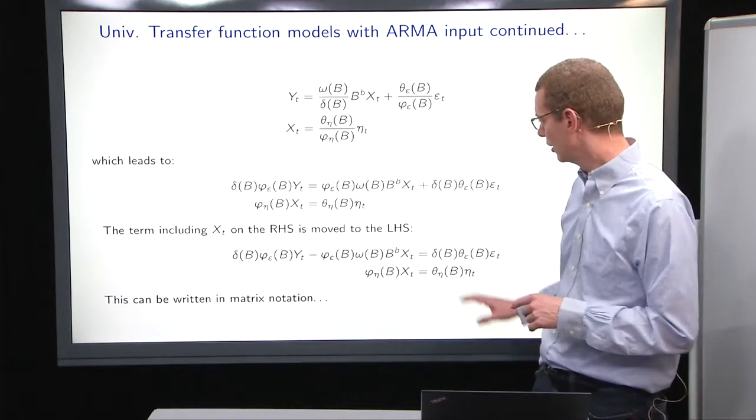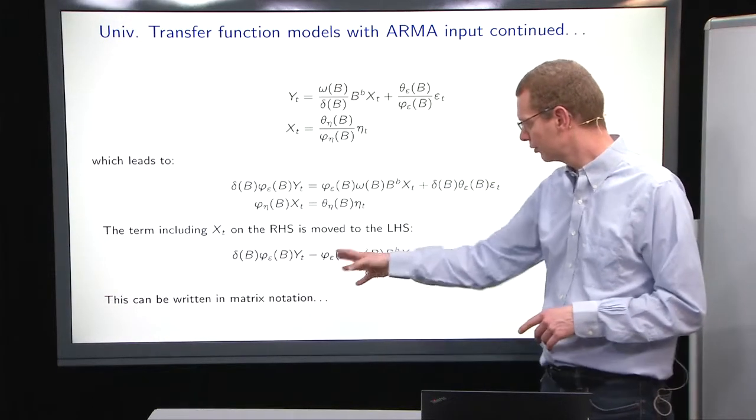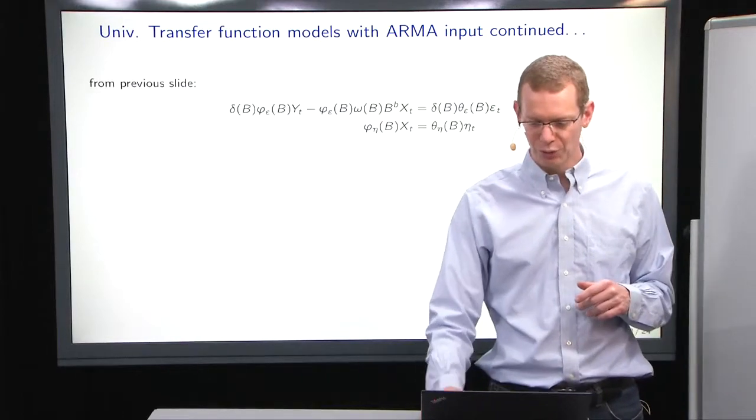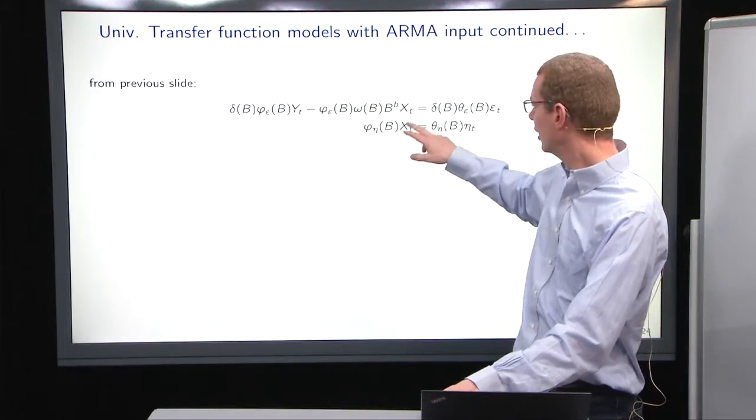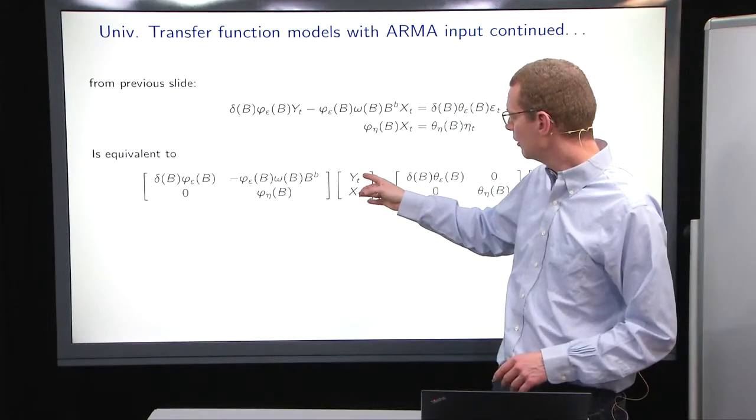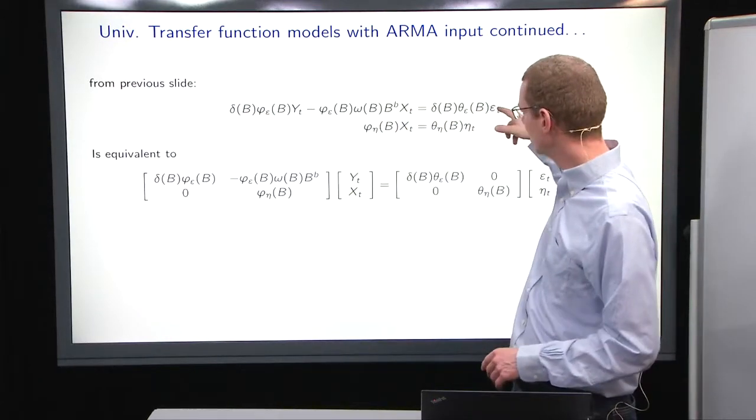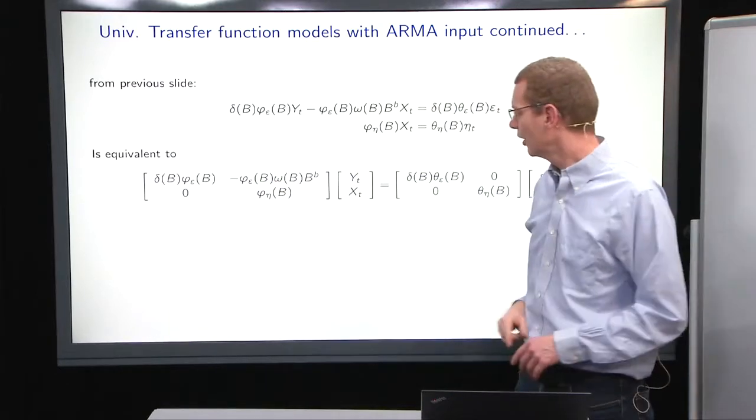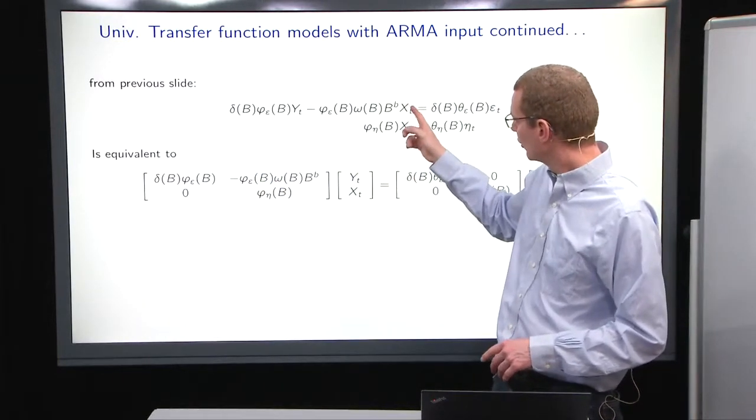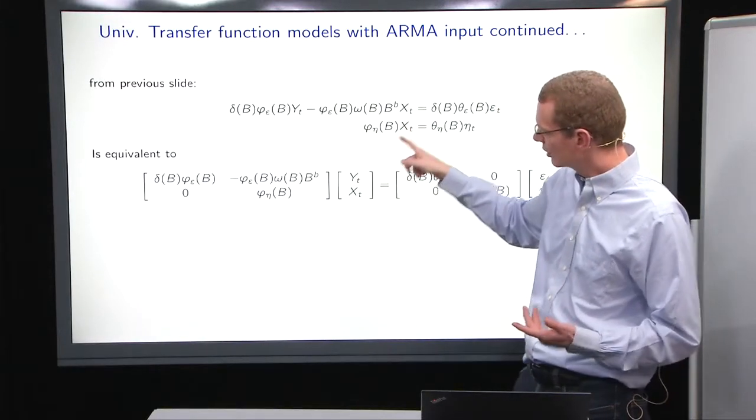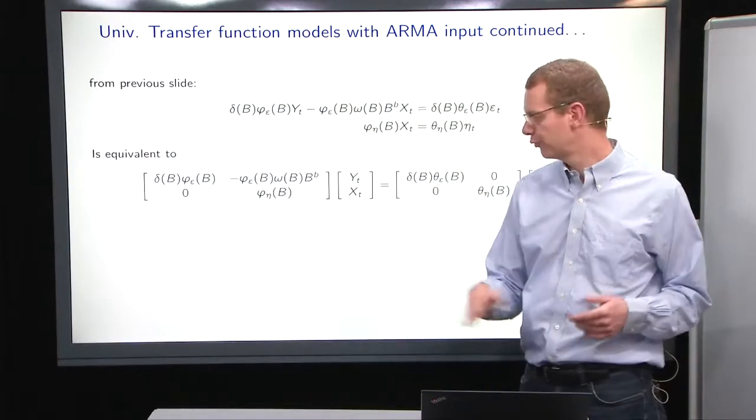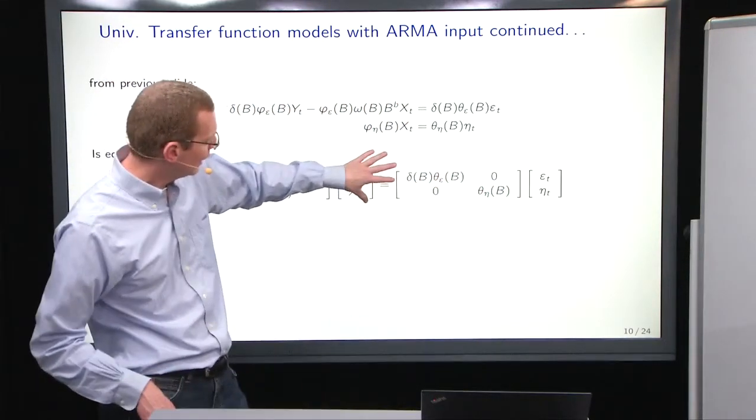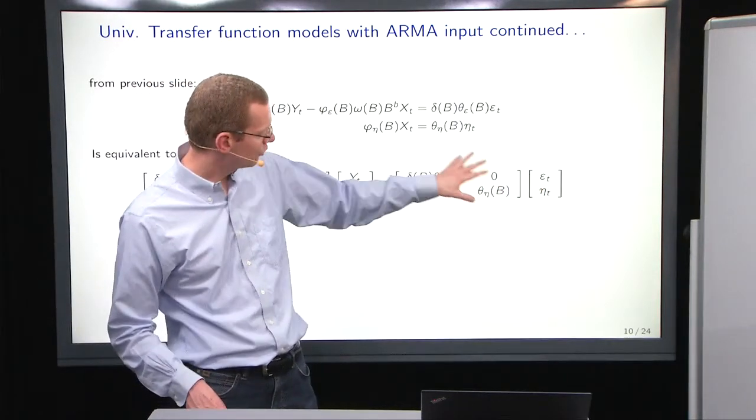So if we take and move that term to the left-hand side, we have the following notation down here, and as we saw in the general multivariate case, the bivariate example from before, we can write it in matrix-vector form. We have y for the first equation, x with that transfer function, and since y does not give any input into x, we have a zero here. And similarly, we have a structure here for the epsilon and the eta, how they go through some moving average operators.